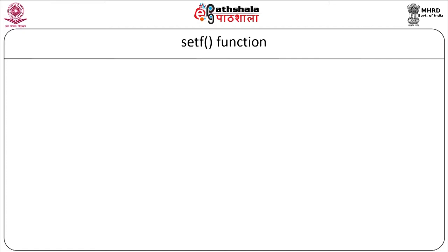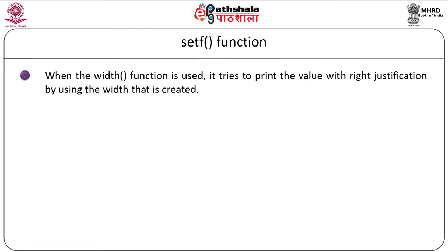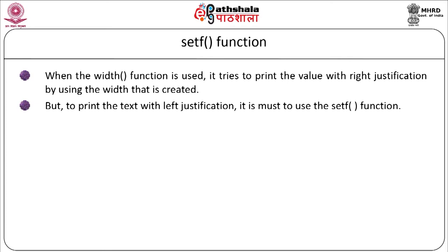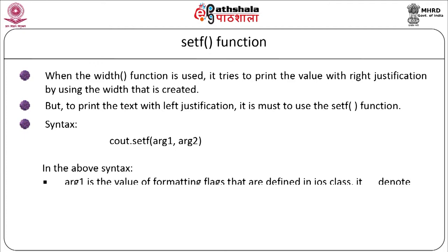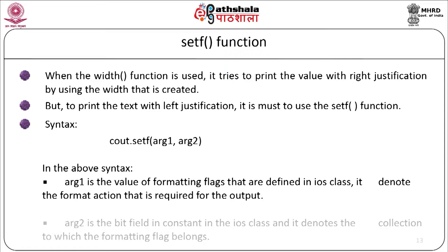Now we will see the setf function. When the width function is used, it prints the value with right justification. To print text with left justification, you must use the setf function. The syntax is: cout.setf(argument1, argument2). Argument1 is the value of formatting flags defined in the IOS class, denoting the format action required. Argument2 is a bit field constant in the IOS class denoting the collection to which the formatting flag belongs.